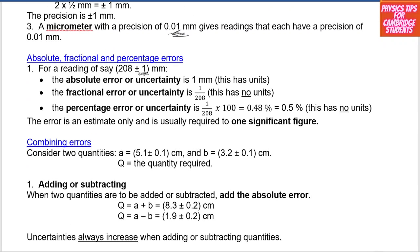Absolute uncertainties are related to the measuring instrument itself. So when we calculate, say, density = mass / volume, we will have absolute uncertainties from the balance for mass, and from the measuring instrument used for volume. The absolute uncertainty for density is therefore related to the absolute uncertainties of both mass and volume.